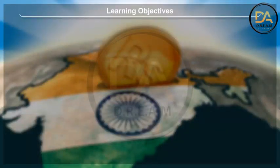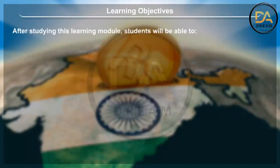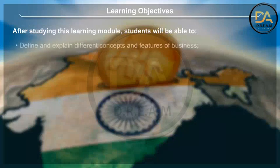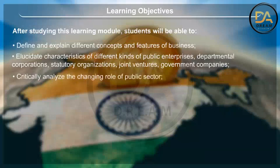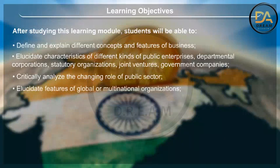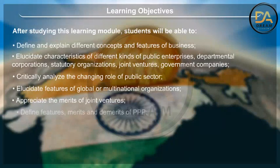Learning objectives. After studying this learning module, students will be able to define and explain different concepts and features of business, elucidate characteristics of different kinds of public enterprises — departmental corporations, statutory organizations, joint ventures, government companies — critically analyze the changing role of the public sector, elucidate features of global or multinational organizations, appreciate the merits of joint ventures, and define features, merits and demerits of PPP.